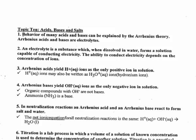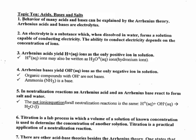Our next topic is Topic 10: Acids, Bases, and Salts. We need to understand the Arrhenius definition: acids are H+ producers, bases are OH- producers. Acids and bases are electrolytes. An electrolyte is a substance that, when dissolved in water, conducts electricity. So NaCl (aqueous) is an electrolyte, HCl (aqueous) is an electrolyte, and NaOH (aqueous) is an electrolyte — but they have to be dissolved in water.